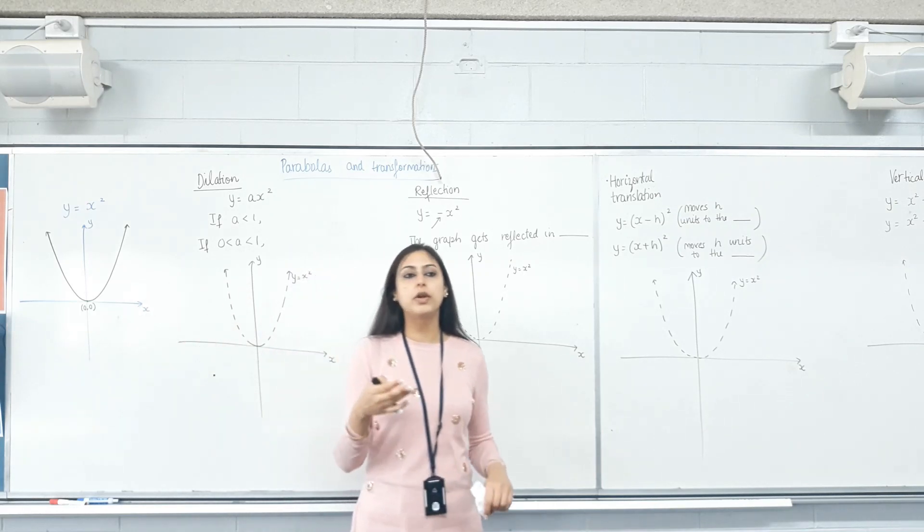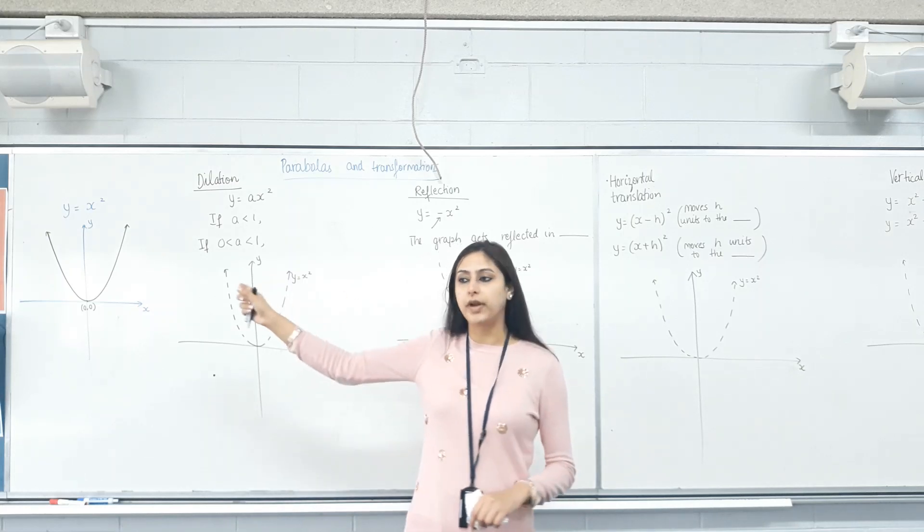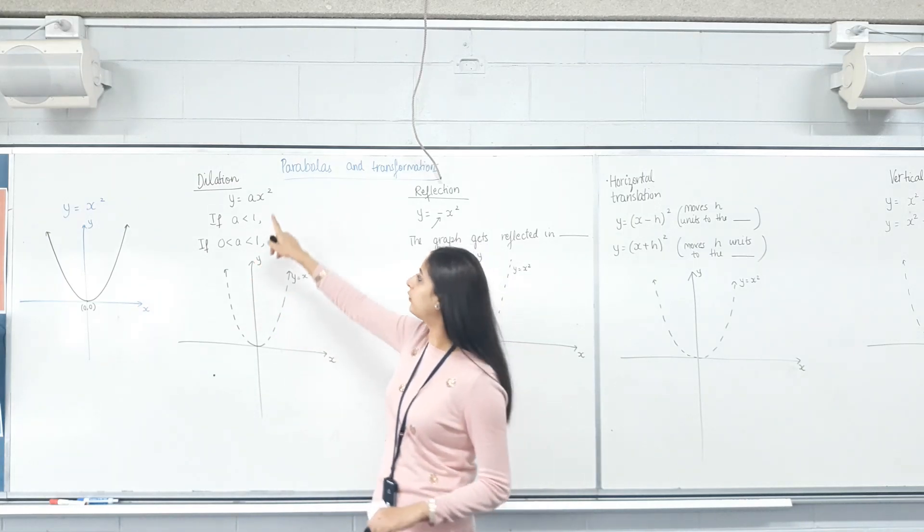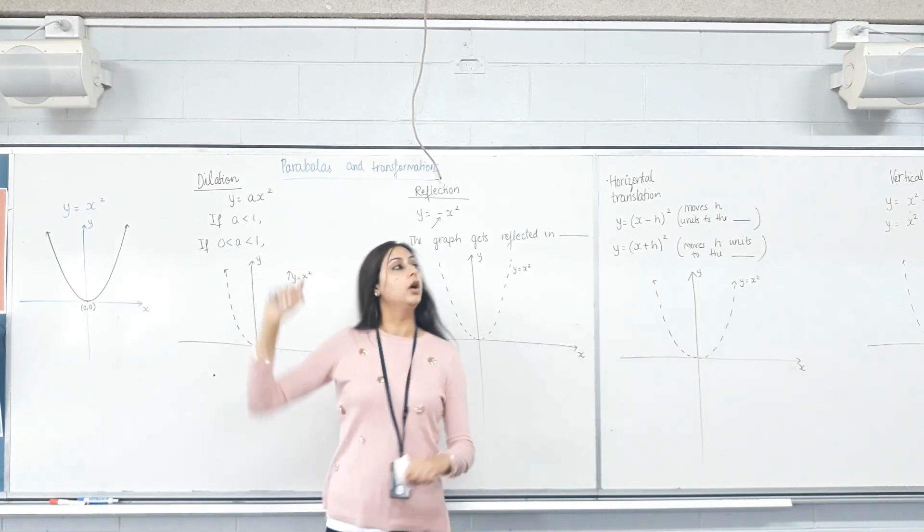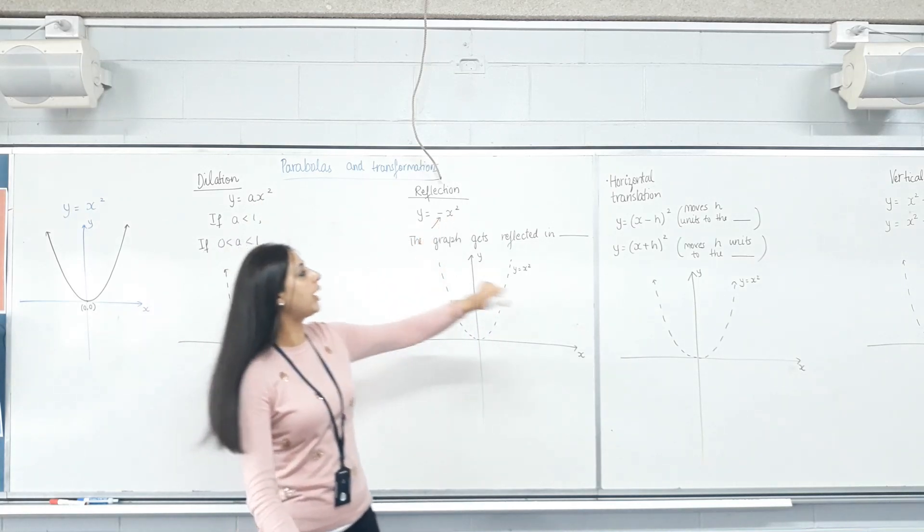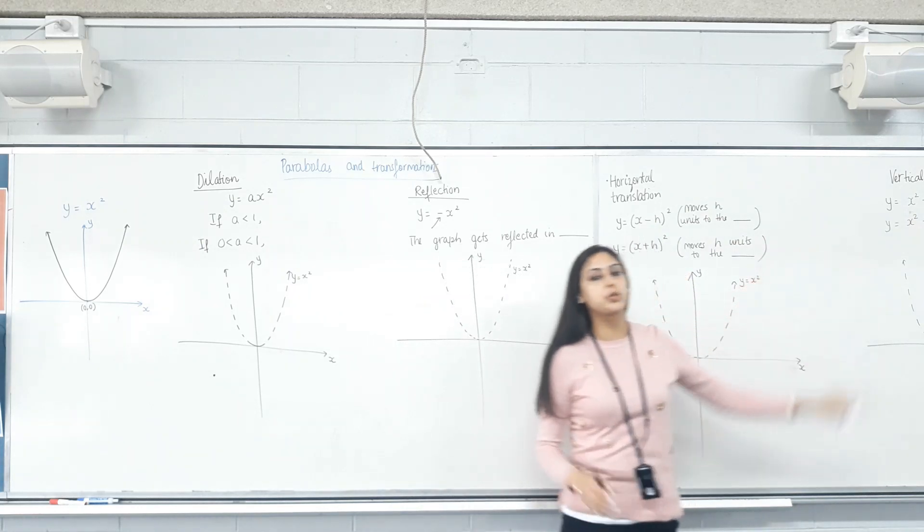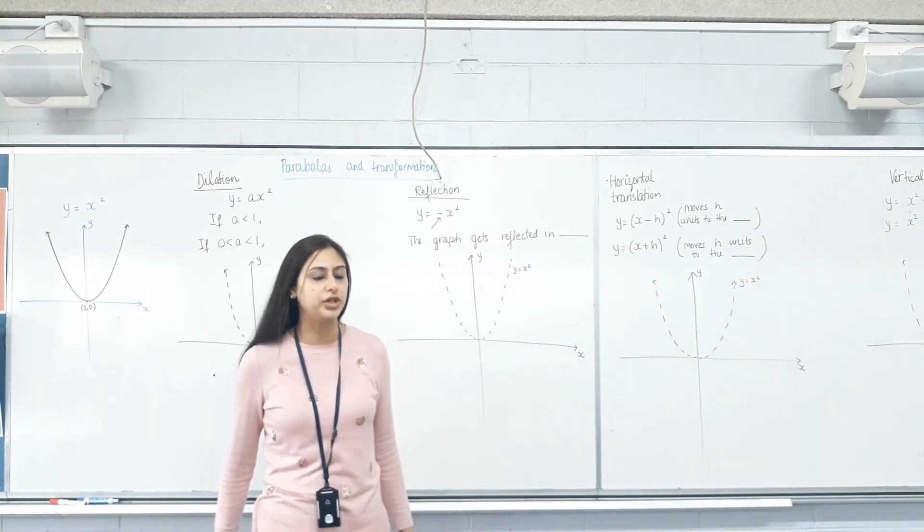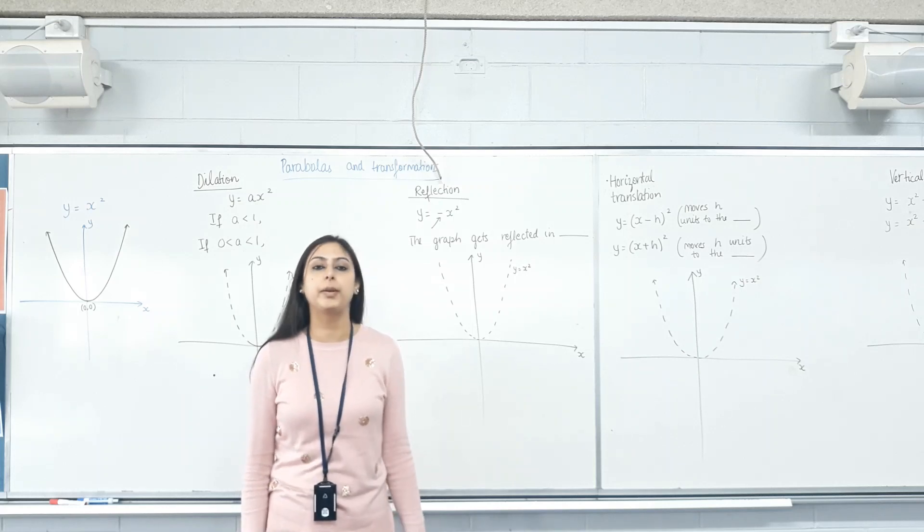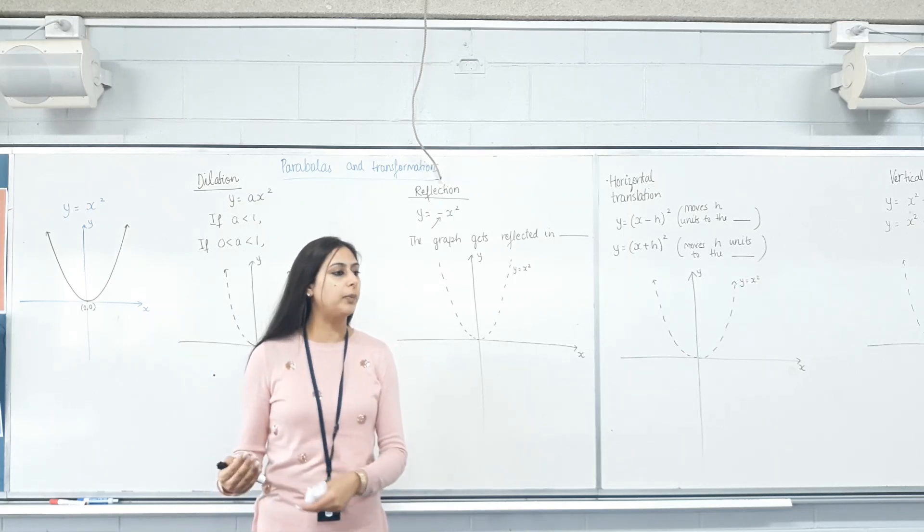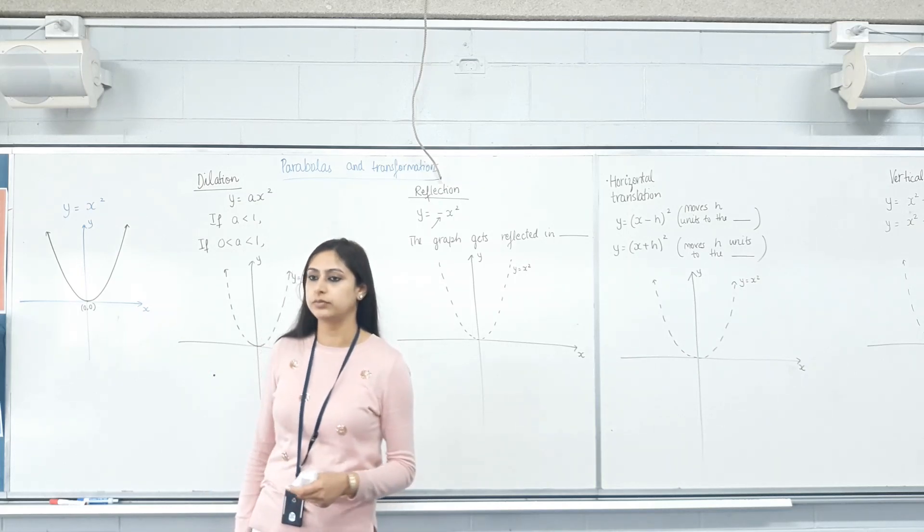So to sketch quadratics, we need to understand what happens to the graph if we do things. Like what if we multiply x squared with a number? What if that number is negative? What happens if we take away a number and then square it? What happens if we have x squared and then we plus or minus a number? These are all the transformations that can happen to a parabola. Once we understand what happens, we can sketch any quadratic.